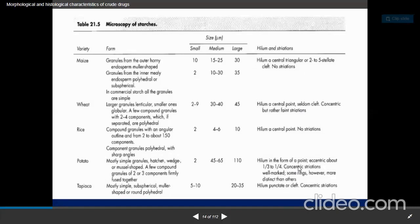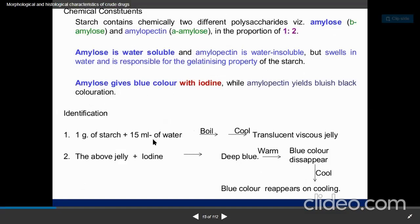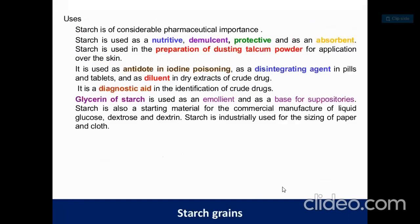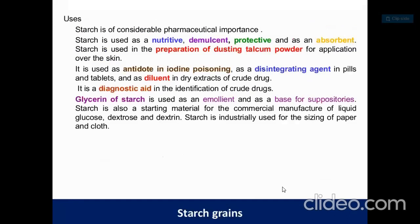The chemical constituents of starch include amylose, which is water soluble and gives a blue color with iodine. If you boil starch with water, it forms a translucent viscous jelly; that jelly gives a deep blue color with iodine, which disappears on warming and returns on cooling. Pharmaceutically, starch is used as a demulcent, protective, absorbent, in dusting talcum powder, as a disintegrating agent, diluent, and diagnostic aid.